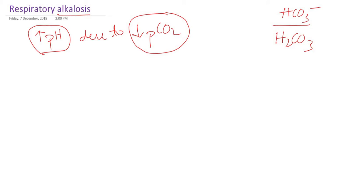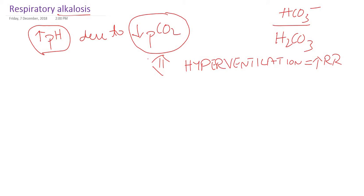This decrease in the partial pressure of carbon dioxide is due to hyperventilation. Hyperventilation is nothing but an increased rate of respiration — more respiratory rate means more and more carbon dioxide will be washed out, causing loss of carbon dioxide in respiratory alkalosis. So what are the causes for hyperventilation? Those will be the causes for respiratory alkalosis.